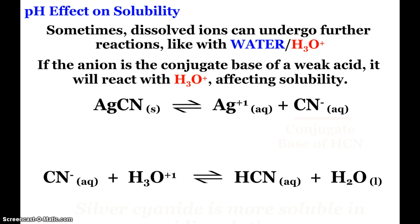So if the anion that we create is the conjugate base of a weak acid, it will react with hydronium and ultimately affect the solubility. So here we see silver cyanide. Silver cyanide dissolves into the silver ion and the cyanide ion and hopefully you recognize that the cyanide ion is the conjugate base of our weak acid HCN.